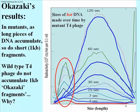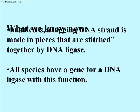Okazaki had demonstrated discontinuous synthesis of short pieces of DNA using the T4 ligase-deficient phage, which explained how one strand must behave at the replication fork. In his honor, these pieces of DNA were later named Okazaki fragments. We know that new DNA made along the lagging strand template is made in pieces that are later stitched together by DNA ligase, and that this occurs in all species and all cells. We also know that all species have genes for their own DNA ligase, and can therefore make their own enzyme when they replicate their own DNA.